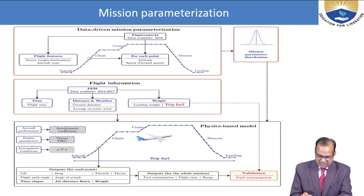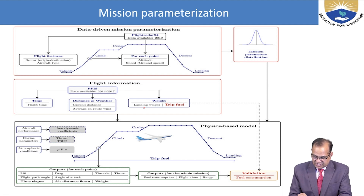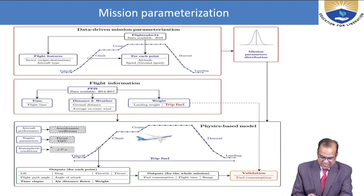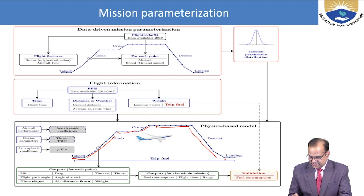Next is flight information. We should also have information about the flight. First, we need time, distance, weather, and weight — where data is available. For flight time and distance, we use ground distance and average en-route wind. For weight, we look at landing weight and trip weight. The mission phases again are: takeoff, climb, cruise, again climb, cruise, descent, and landing.